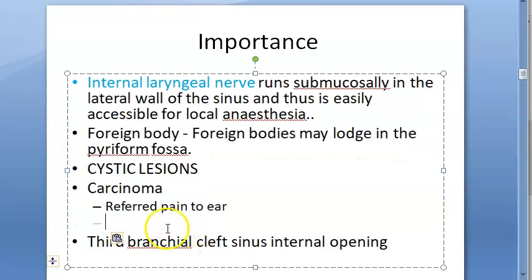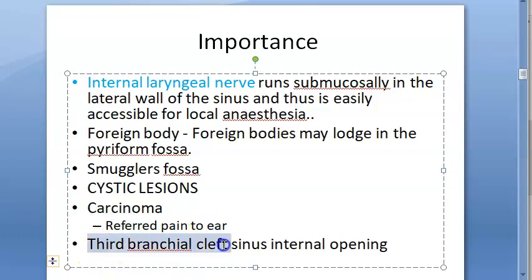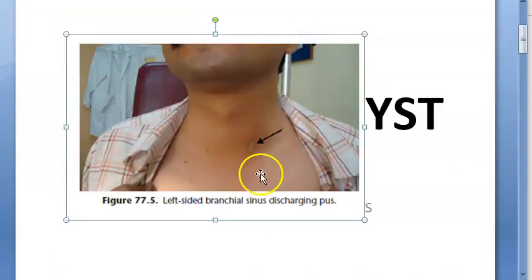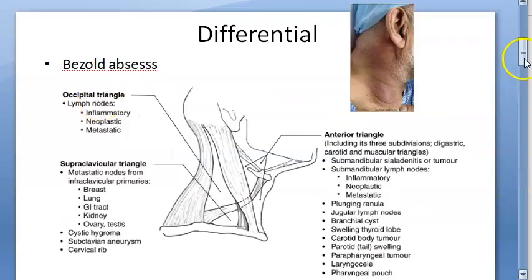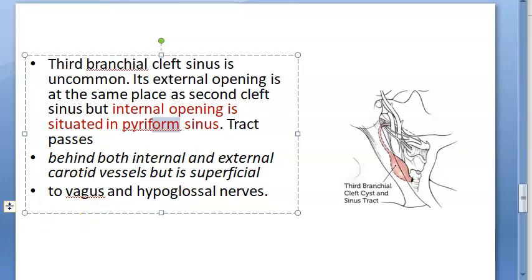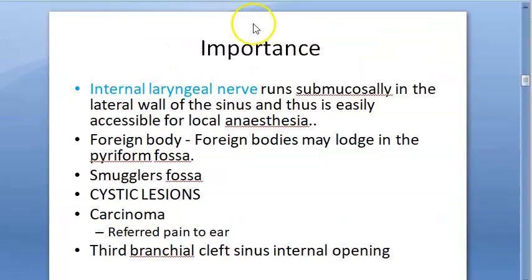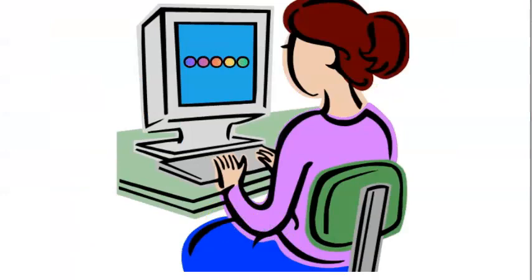Additional importances of the pyriform sinus include: foreign bodies, its use as a 'smuggler's fossa,' cystic lesions, and carcinoma. Importantly, in the third branchial cleft sinus, the internal opening is located in the pyriform sinus — a very important anatomical fact. So among the branchial cleft cysts, it is specifically the third one whose internal opening is at the pyriform sinus.